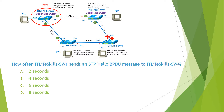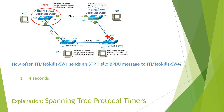The question reads: how often does Switch 1 send an STP Hello BPDU message to Switch 4? From the diagram, we see that Switch 1 is not the root switch, so it will forward the STP Hello BPDU message based on the Hello Timer configured on the root switch, which is Switch 2. The Hello Timer configured on Switch 2 is 4 seconds. So the answer for this question is B. You can find the detailed explanation in the video: spanning tree protocol timers.